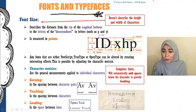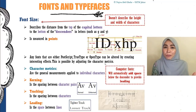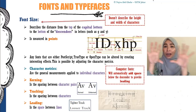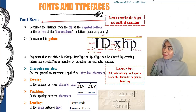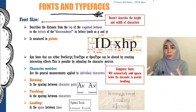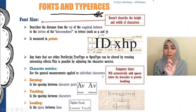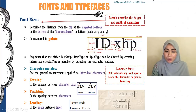Any fonts that are PostScript, TrueType, or OpenType can be altered by creating interesting effects. This is possible by adjusting the character matrix. When we place text inside a poster or report using graphic editors like Photoshop, the individual adjustments you make are measured using something called the character matrix. Character matrix refers to the general measurements applied to individual characters — meaning every single letter you put on your poster, you can change how it looks.